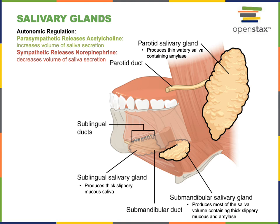The most anterior of the salivary glands is the sublingual salivary glands, located just inferior to the tongue. The sublingual salivary glands produce a small volume of thick, slippery mucus saliva that helps to lubricate the oral cavity.